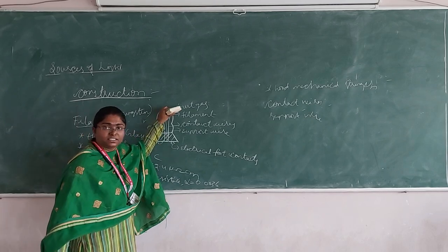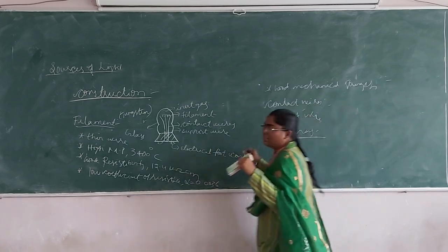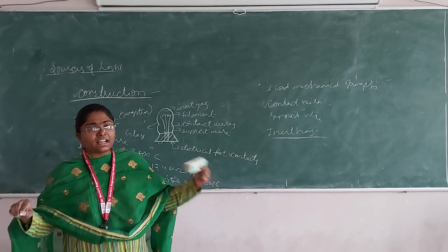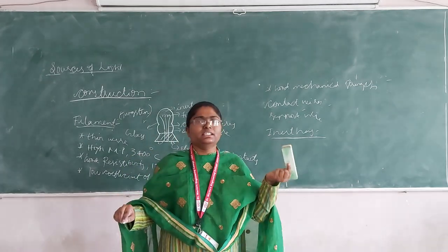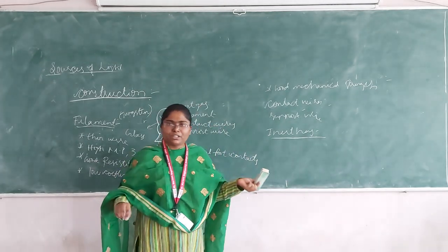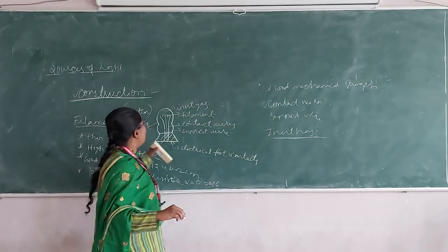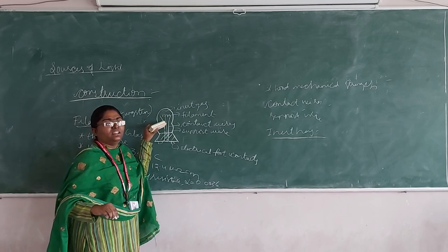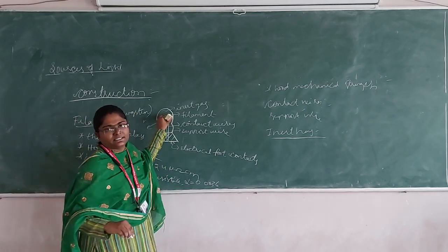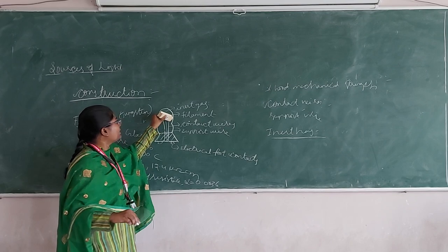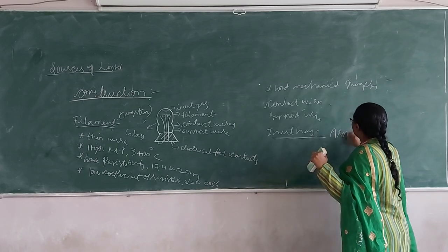The next important thing is inert gas. What are the names of inert gas elements? Helium, xenon, radon, argon, krypton are some of the inert gas elements. What is the purpose of using inert gas in an incandescent lamp? As it keeps on heating, there is a tendency of evaporation — in order to overcome evaporation we use inert gas. In order to overcome oxidation, we use inert gas. The inert gas we use here is argon.